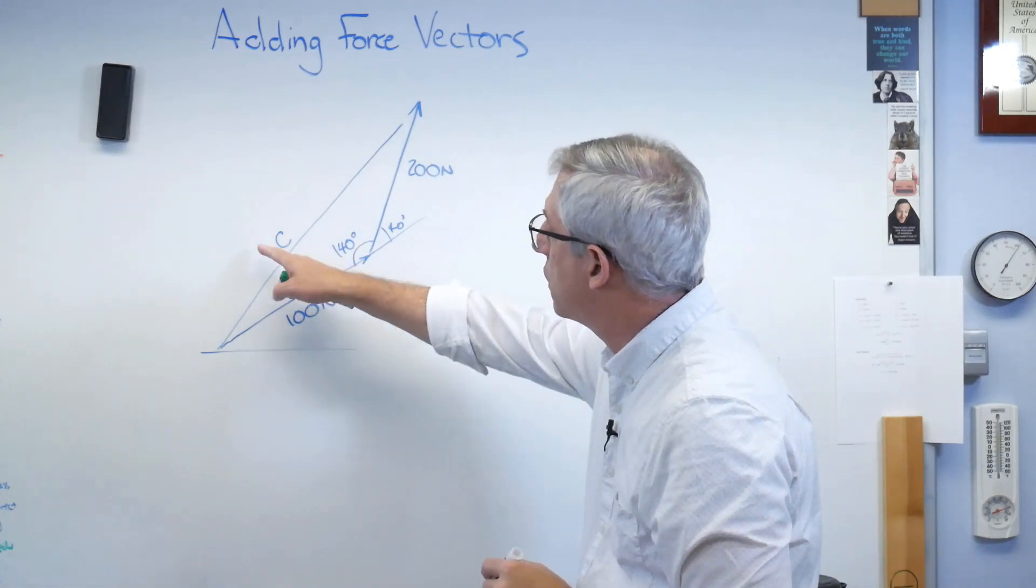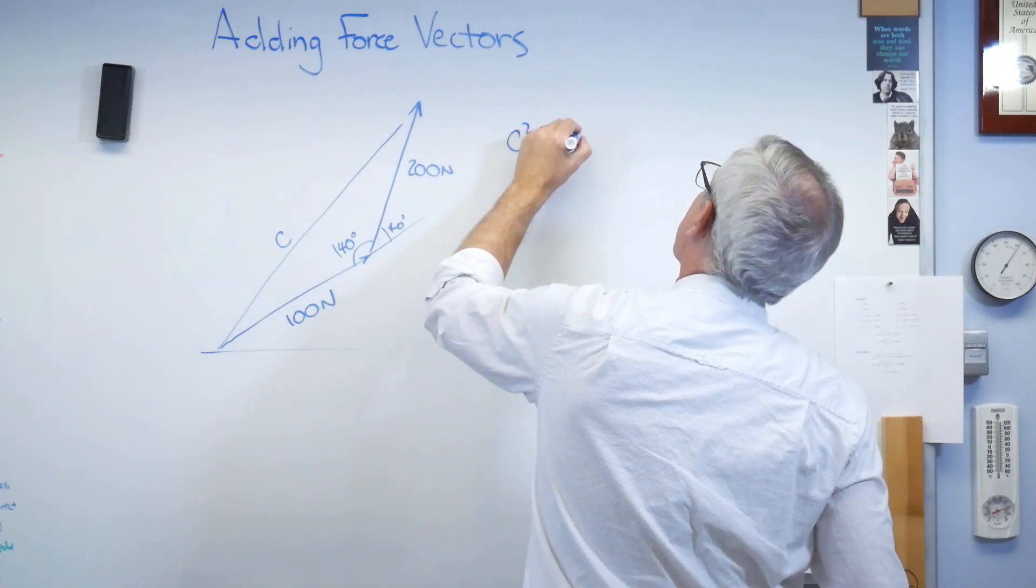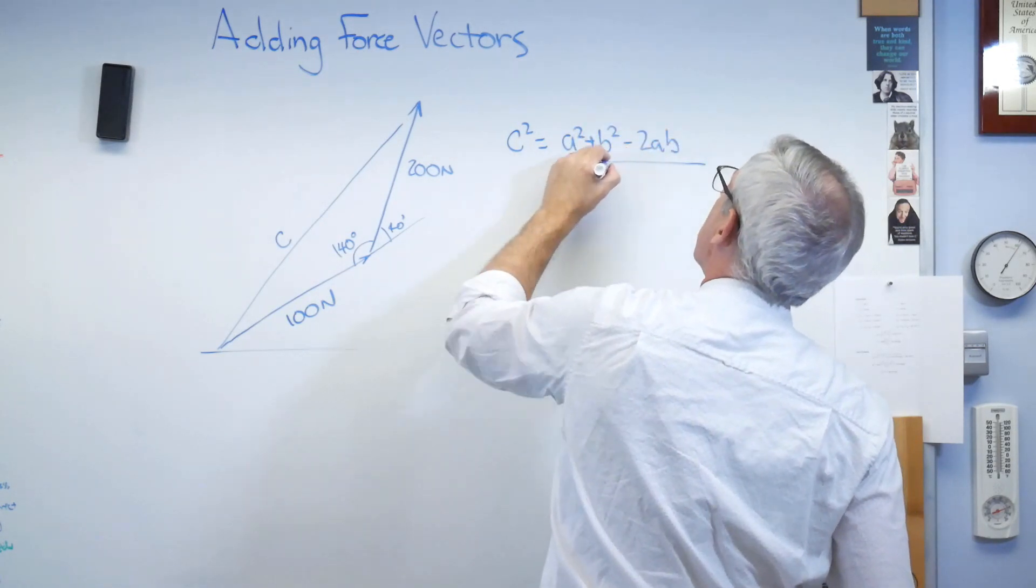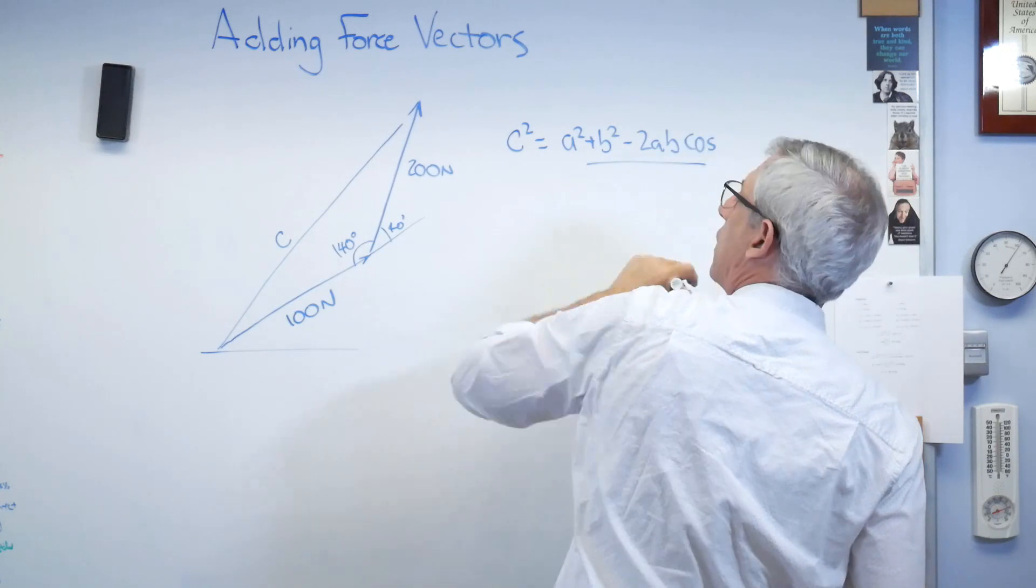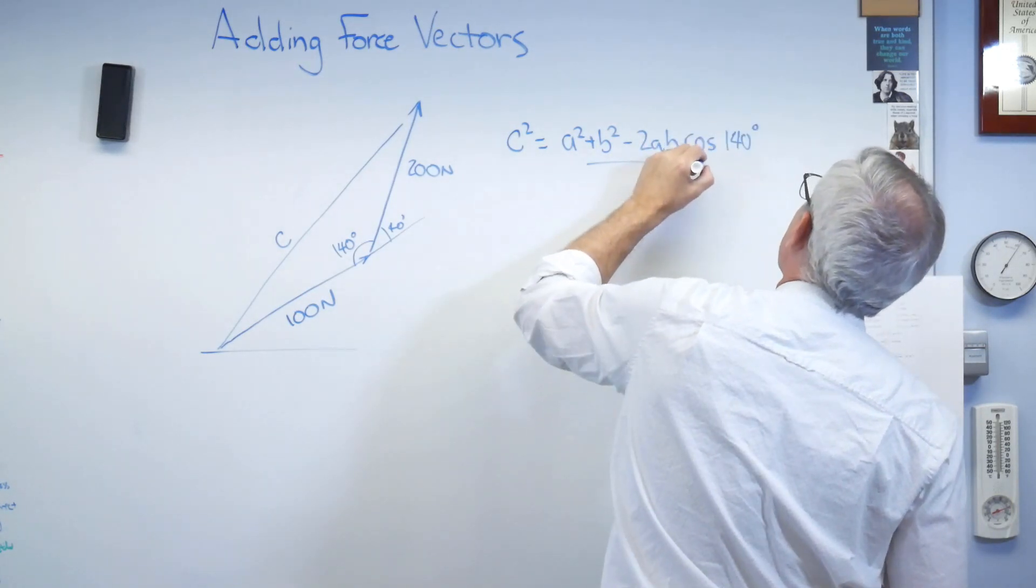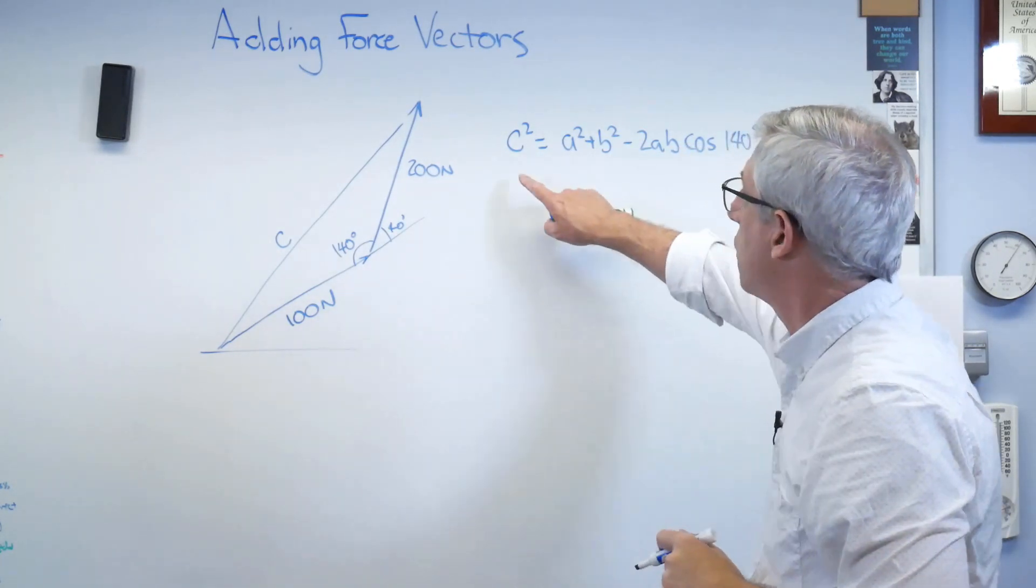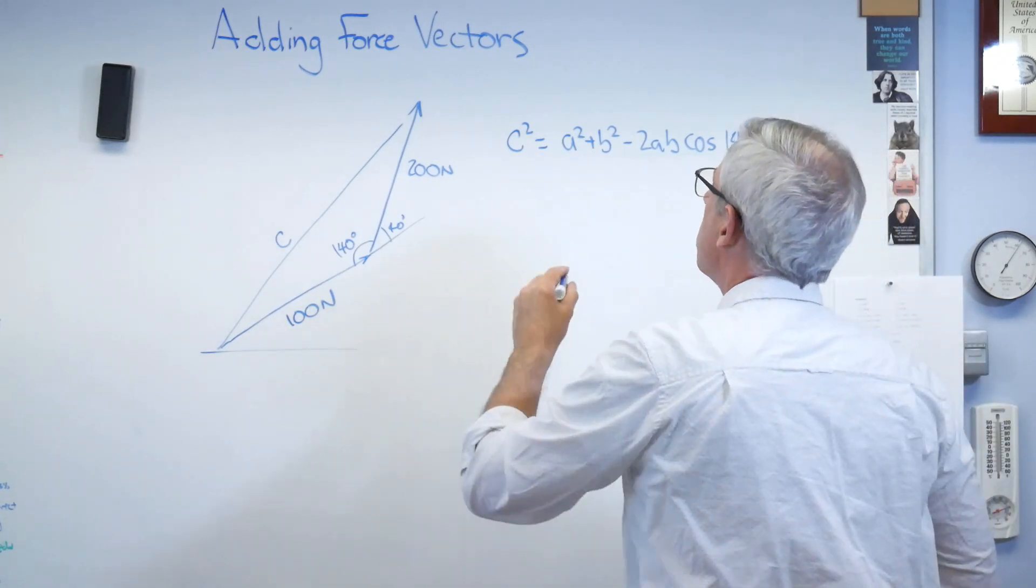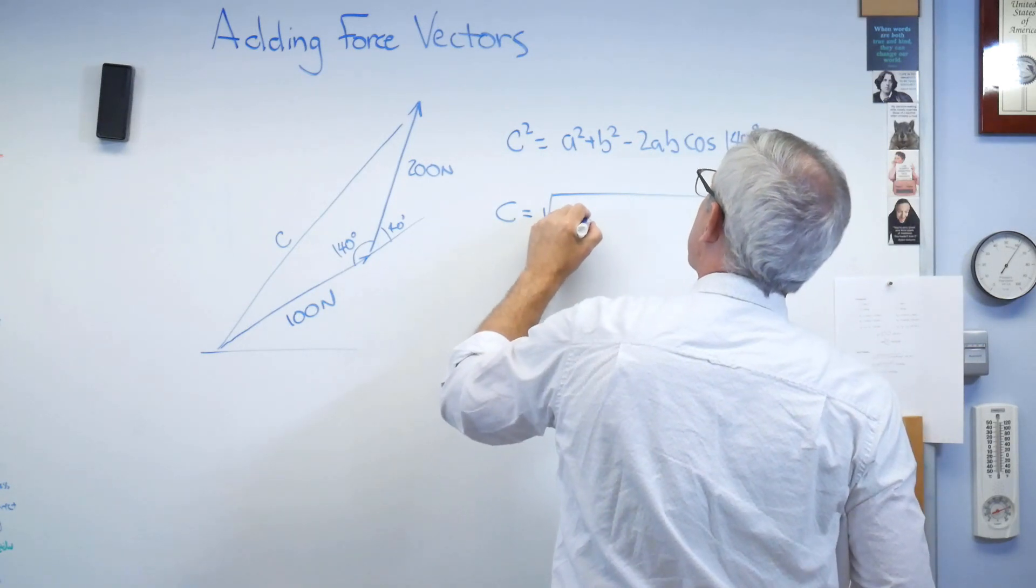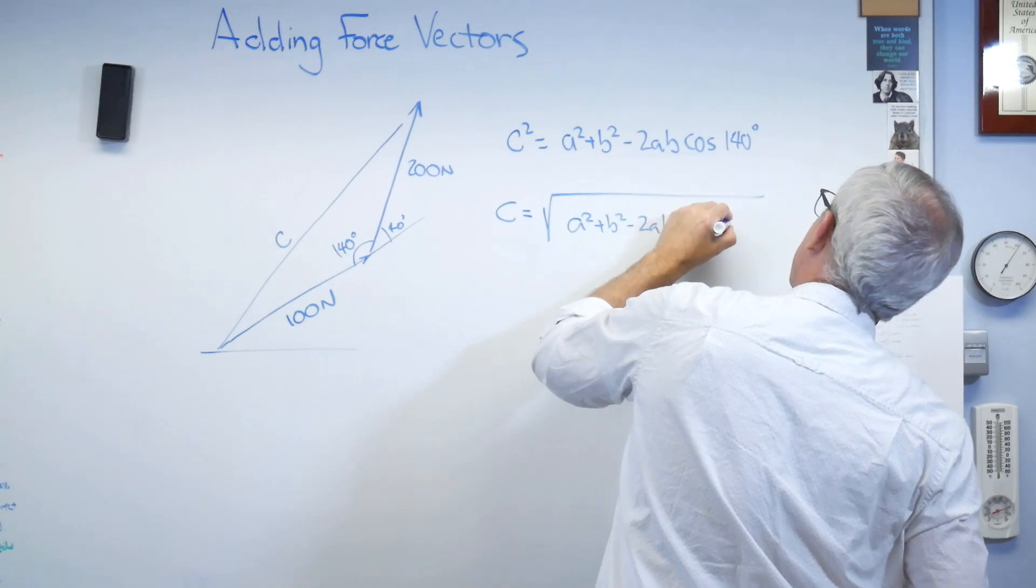Well, if I want to know what C is, the law of cosines says C squared equals A squared plus B squared minus 2AB cosine of that angle right there. I've got to call that something. I guess I'll just put it in here as 140 degrees. I'm going to solve for C. I want to know what C is. Well, it's almost, we've almost got it solved anyway.